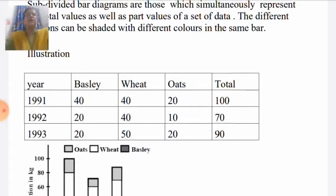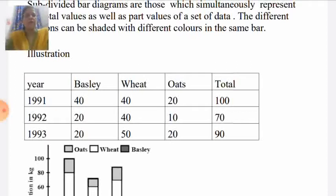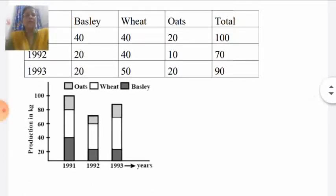So the total for 1991 is 100. In 1992 it is 70, in 1993 it is 90 — with parts being 20 kg basile production, 50 kg wheat production, and 20 kg oats production. We present these data on the graph by making the bars.